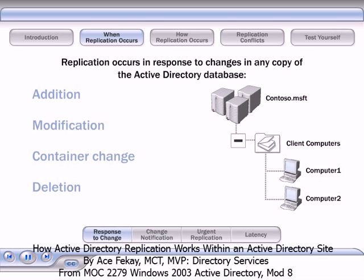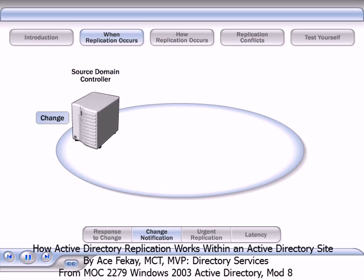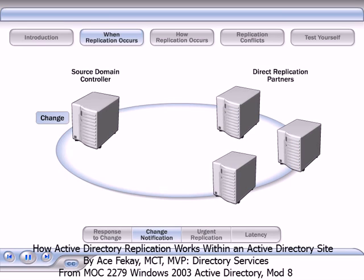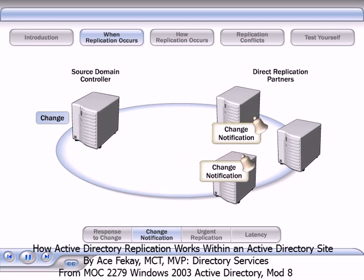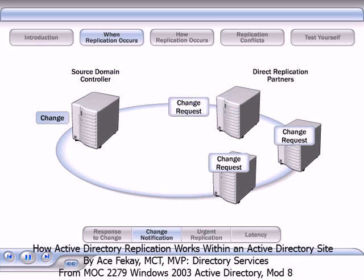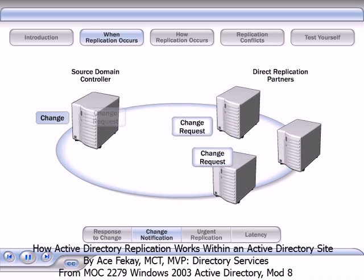Replication also occurs upon the deletion of an object from the directory, as when you delete a computer account for a computer that has been removed from the network. When a change occurs on a domain controller, the domain controller notifies its replication partners within the same site. This process is called change notification.